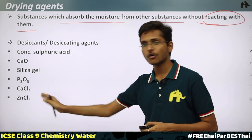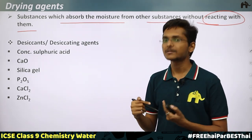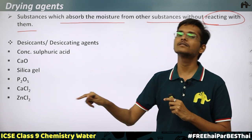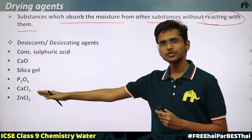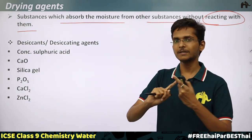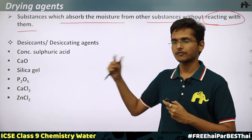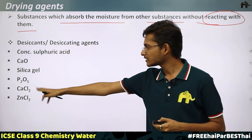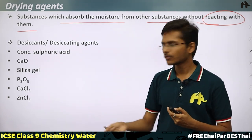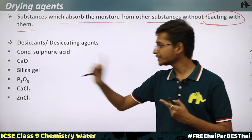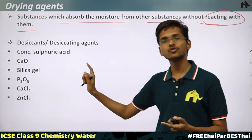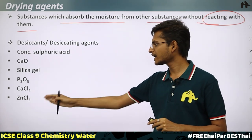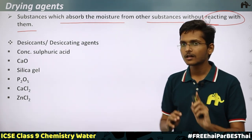Calcium chloride and zinc chloride are examples of deliquescent substances — they absorb moisture and dissolve in it to form saturated solutions. Since they also absorb moisture, they can be used as drying agents, provided they do not react with the substance we are trying to dry. The main requirement for a drying agent is that it absorbs moisture without reacting with the substance being dried.